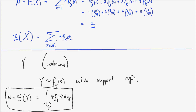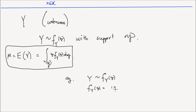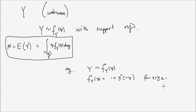Let's do a concrete example. Suppose we have a random variable y with PDF f_y(y) given by 12 times y squared times (1 minus y), for y between 0 and 1. The support of this random variable is the values between 0 and 1, so script Y is the interval [0, 1].